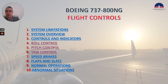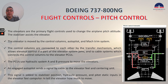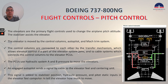Now let's talk about pitch control. The elevators are the primary flight controls used to change the airplane pitch attitude. The stabilizer assists the elevator. The elevator is moved by the control columns, autopilot, and MACH trim system. The control columns are connected to each other by the transfer mechanism, which allows elevator control if a part of the elevator system jams, and to cable systems which connect the control columns to the elevator PCUs. The PCUs use hydraulic system A and B pressure to move the elevators, and you can see the PCUs here.